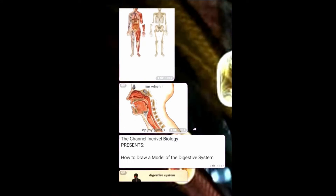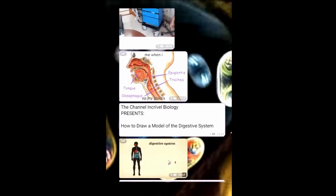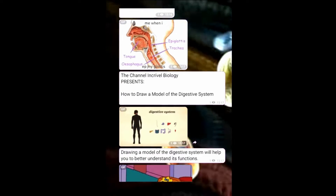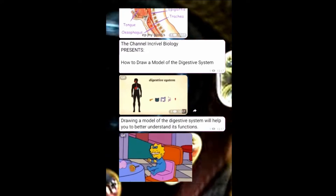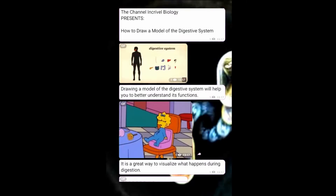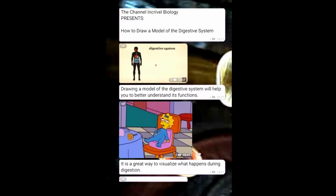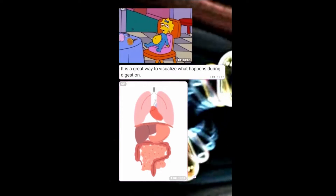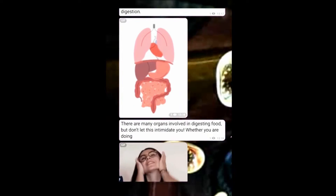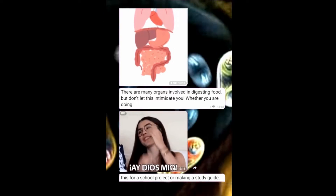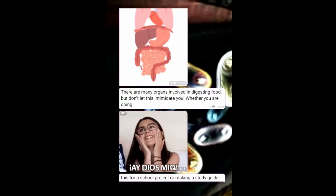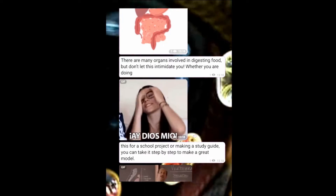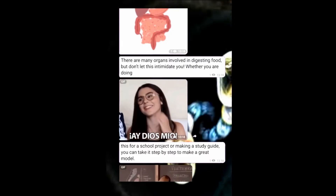How to Draw a Model of the Digestive System. Drawing a model of the digestive system will help you to better understand its functions. It is a great way to visualize what happens during digestion. There are many organs involved in digesting food, but don't let this intimidate you. Whether you are doing this for a school project or making a study guide, you can take it step by step to make a great model.